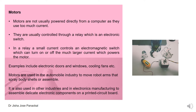The next control output device is motors — small motors used along with computers. These are not usually powered directly from a computer as they use too much current, so they operate as separate devices. They are usually controlled through a relay, which is an electronic switch — a small current controls an electromagnetic switch that can turn on or off the much larger current which powers the motor. Examples include electronic doors, windows, and cooling fans.